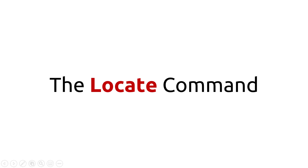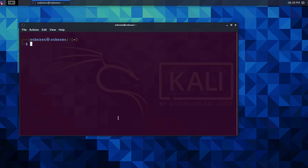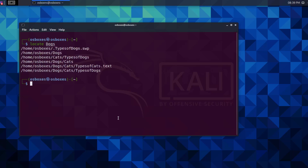The locate command. The locate command searches for files and directories that contain a specific name, then prints the locations of these files and directories. The syntax is: locate, option, pattern. Let's try to locate the pattern 'dogs'. The command is locate and the pattern is dogs. Linux just printed the locations of the directories and files that contain the word dogs.